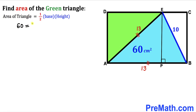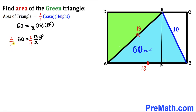So we get: 60 = ½ × 13 × EP, which simplifies to 60 = (13/2) × EP. Multiplying both sides by 2/13, we find that EP = 120/13 cm.